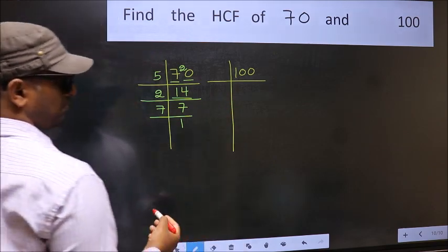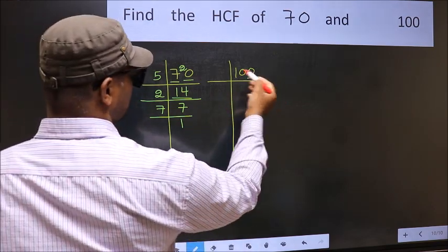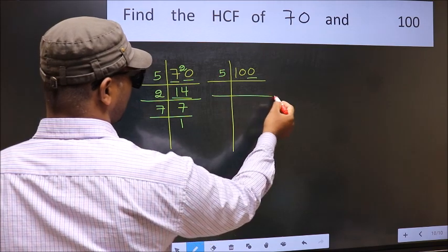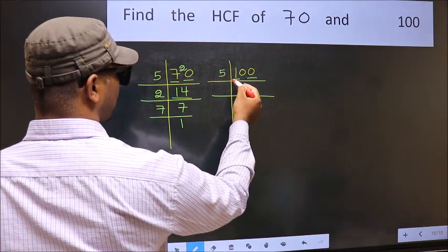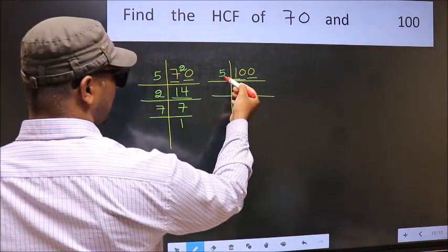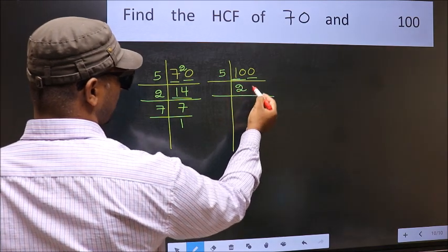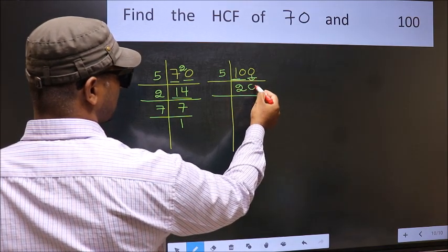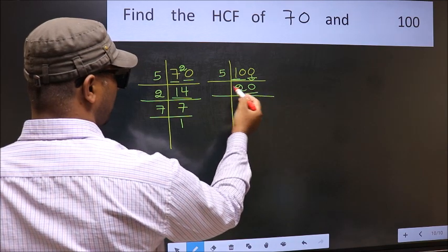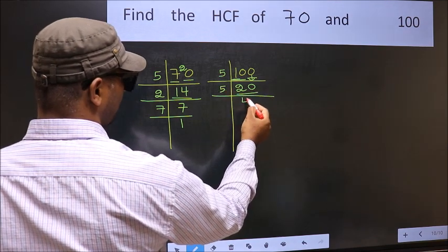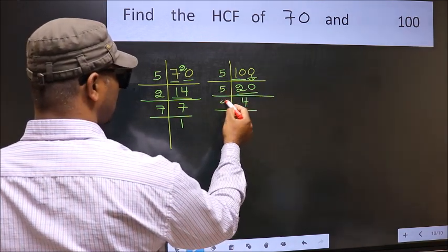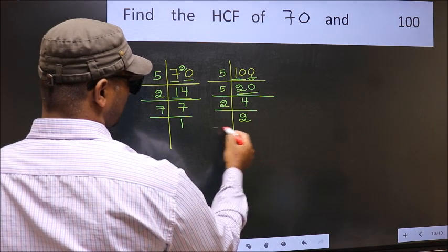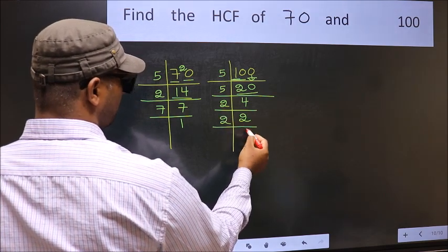Now the other number. Last digit 0 so take 5. First number 1 smaller than 5 so 2 numbers 10. When do we get 10 in 5 table, 5 2s 10. Now this 0 as it is down. Now 20 is 5 fours 20. 4 is 2 2s 4. 2 is a prime number so 2 once 2.